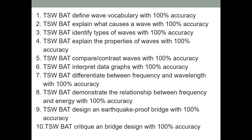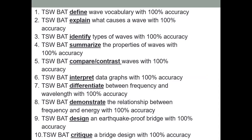Let's go through the answers. Number one: 'The student will be able to define wave vocabulary with 100% accuracy.' That's knowledge — just the definition. Number two: 'The student will be able to explain what causes a wave with 100% accuracy.' That's comprehension. Number three: 'The student will be able to identify types of waves with 100% accuracy.' That's knowledge — you're just regurgitating a fact. Number four: 'The student will be able to summarize the properties of waves with 100% accuracy.' That's comprehension. See the difference there.